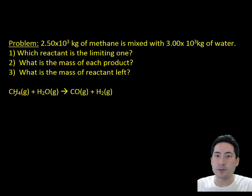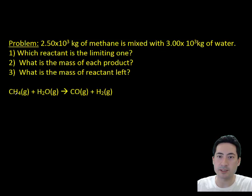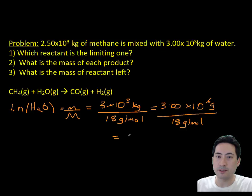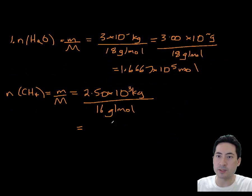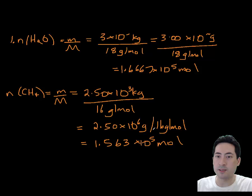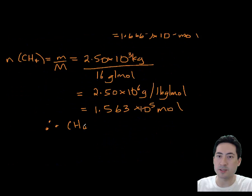Here's a problem. You have 2.5 by 10³ kilograms of methane mixed with 3 by 10³ kilograms of water. Which one's the limiting reactant? We need to work out the number of moles of both. You can see from the equation that it's 1 to 1. If we have 1.5 and 1.6, the smallest one is 1.5, so methane must run out first, and that's the limiting reagent.